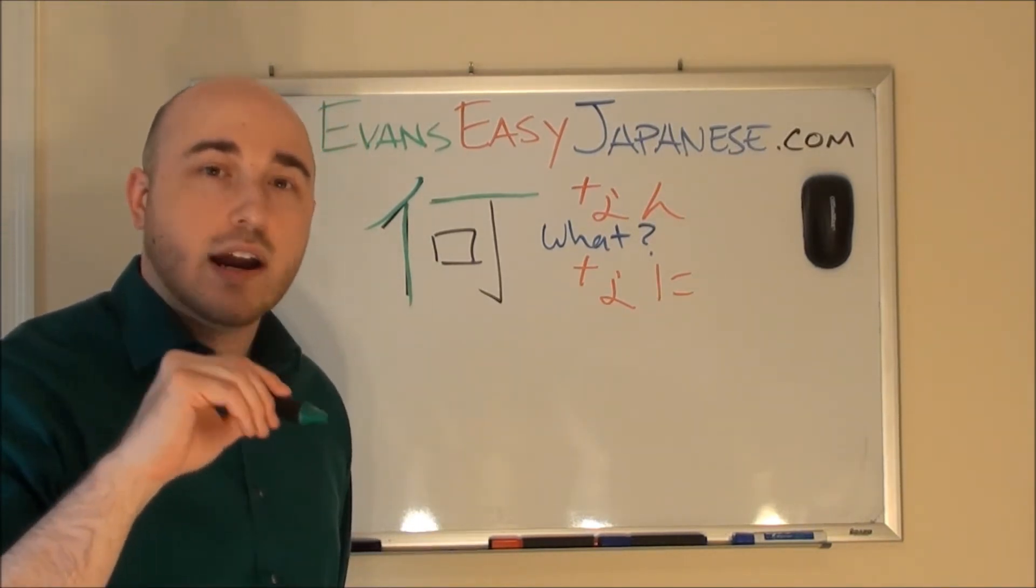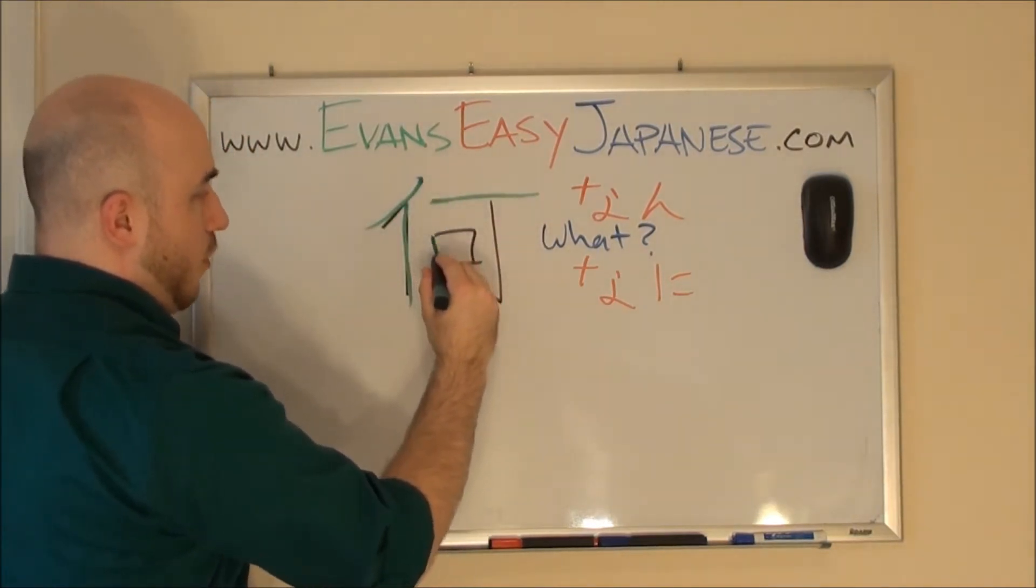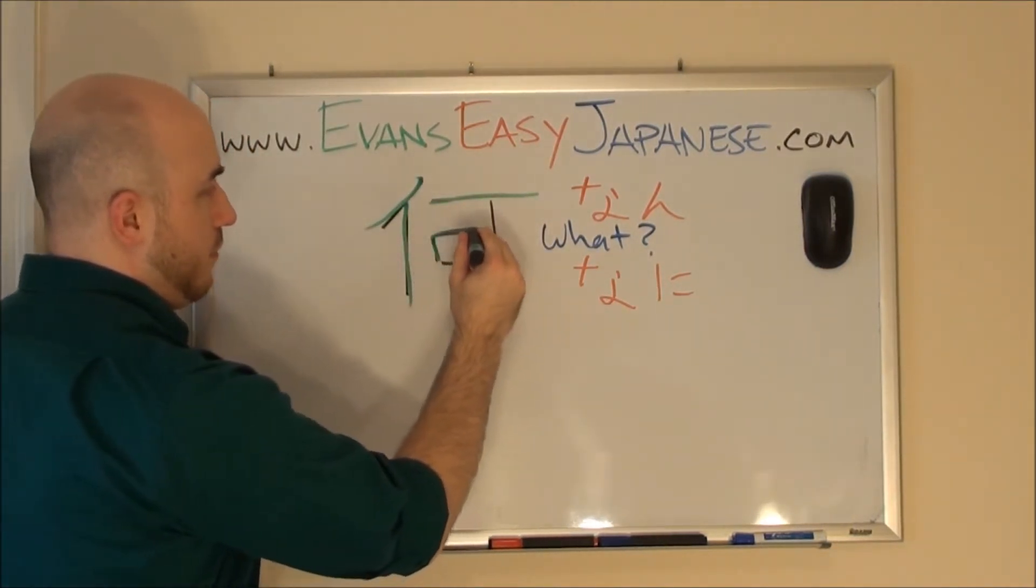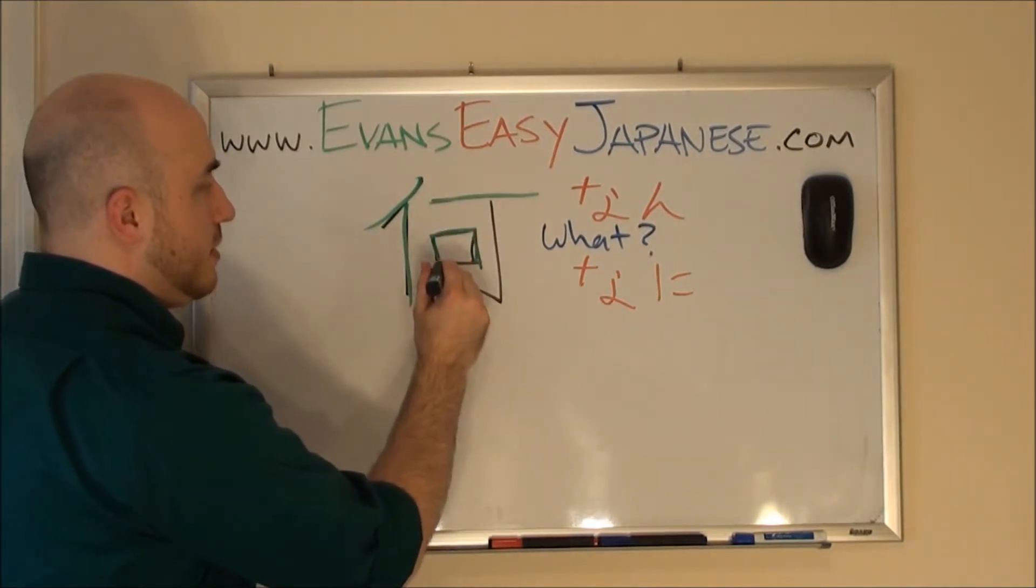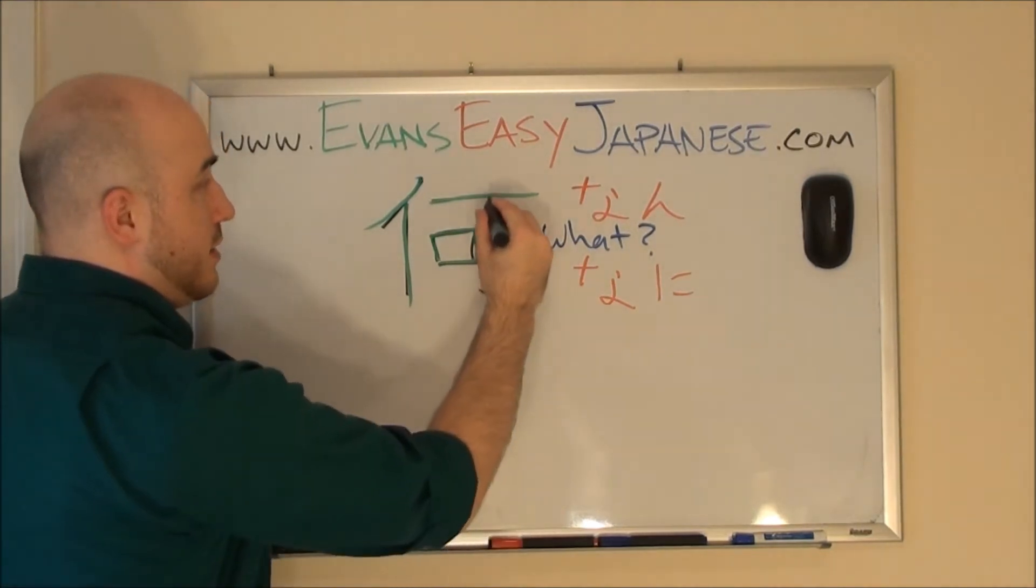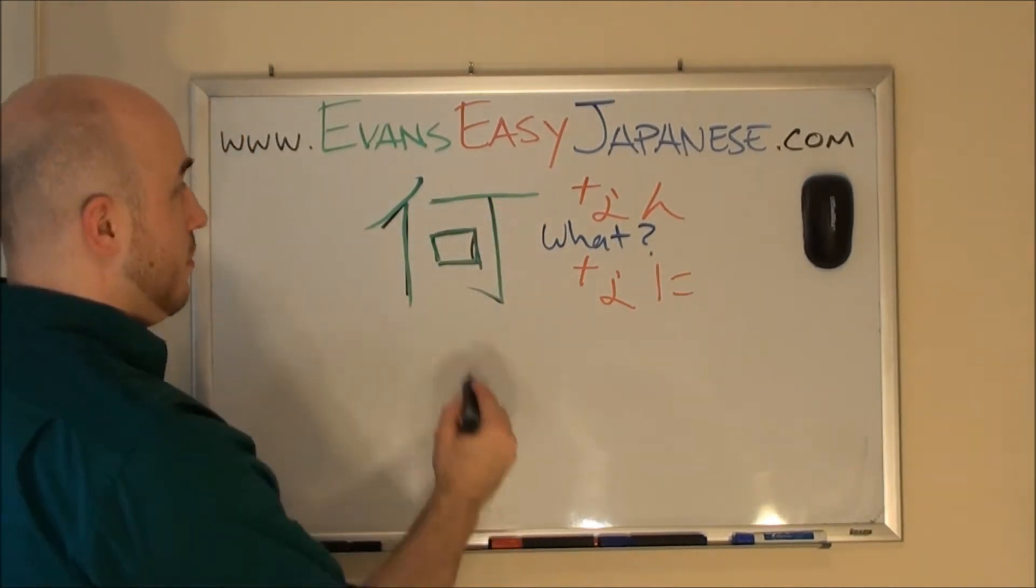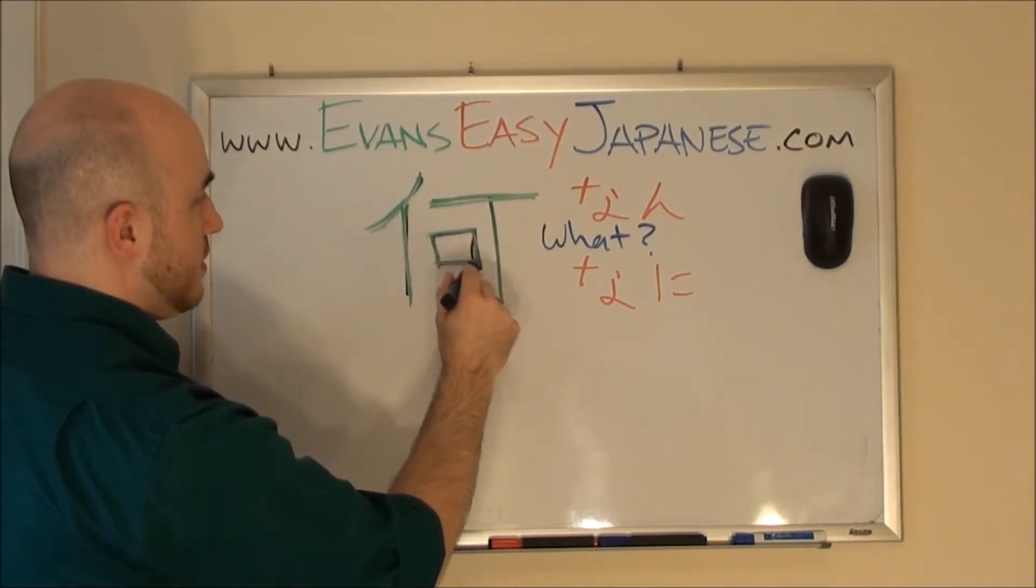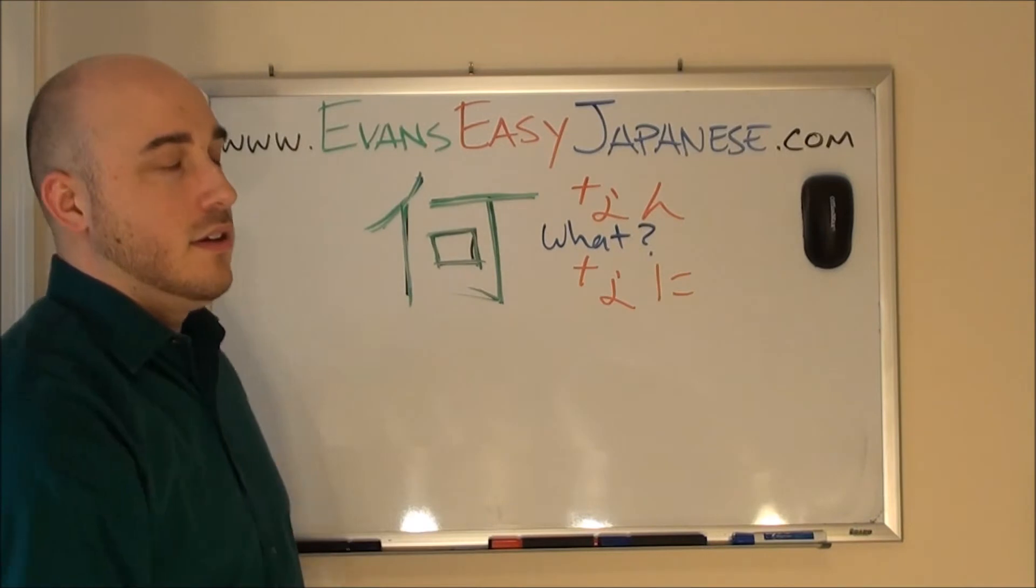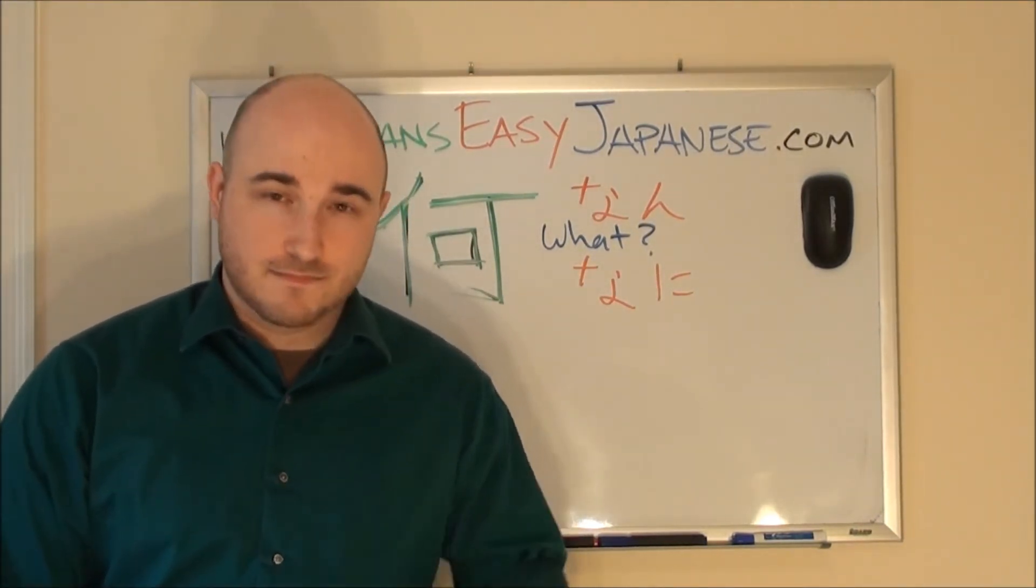This is almost how every single square in Japanese is written. One, two, three, four, five, this is one stroke, five, followed by six. And the last one is seven, it's a little hook. One more time, one, two, three, four, five, six, seven. And that is how you write nani. Awesome.